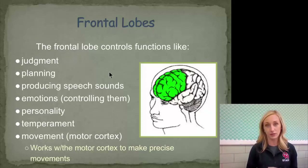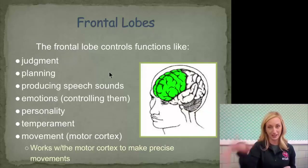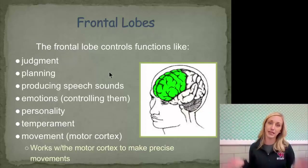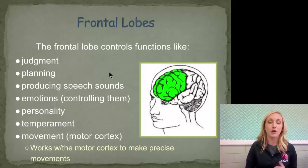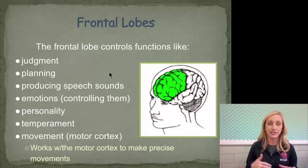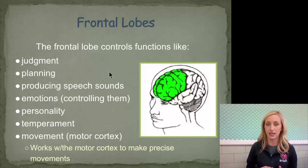The frontal lobe is actually the part of the brain that develops last, meaning it's less developed in adolescents — which is why teenagers tend to fly off the handle, particularly towards their parents. It also controls personality, temperament, how excitable you are at various stimuli, and movement via the motor cortex, working with it to make precise movement.